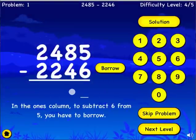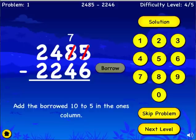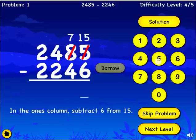In the ones column, to subtract six from five, you have to borrow. Subtract one from eight. Add the borrowed ten to five. In the ones column, subtract six from fifteen.